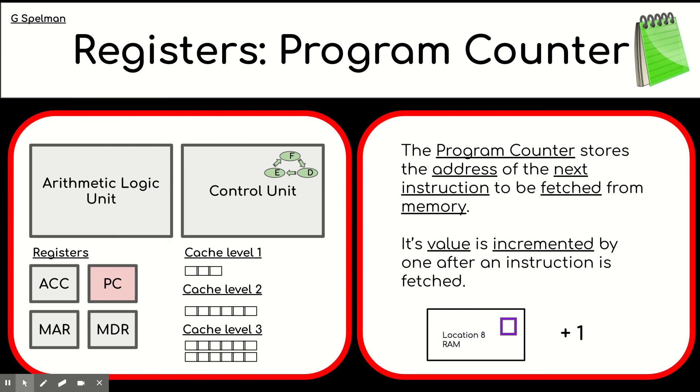But the program counter's purpose is to store the address of the next instruction to be fetched. And once it's done that successfully, the value inside the program counter is incremented by one. So one is added to it. And that's the program counter.